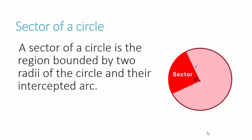A sector of a circle is the region bounded by two radii of the circle and their intercepted arc. In this picture over here, this little piece of my pi — the dark red — is the sector of this entire circle. So we're only looking at a part of a circle versus the whole circle when we talk about a sector of a circle.